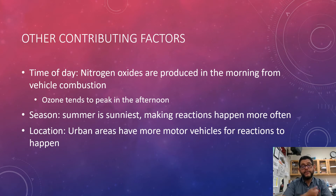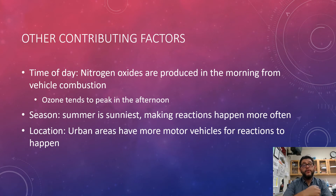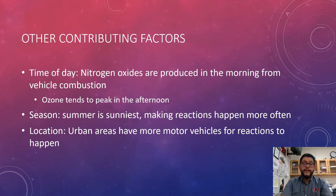Depending on how much sunlight and UV rays you're getting, those nitrogen oxides are going to be showing quite a bit in the morning from vehicle combustion, and then ozone peaks in the late afternoon. Typically during the summertime, which is the sunniest, those reactions occur quite a bit. And if you're in an urban area where there are more vehicles and more industry, there's more chance of getting photochemical smog.